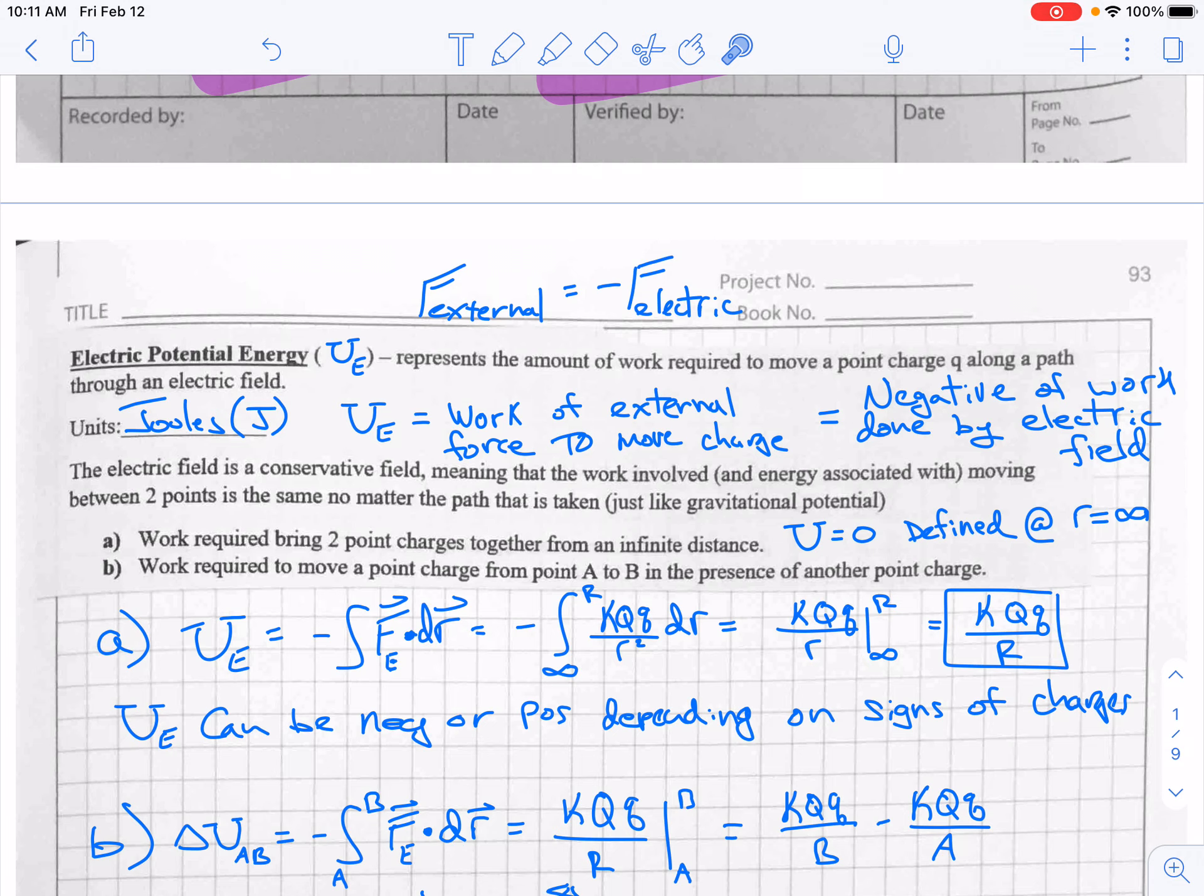The zero point for potential energy is defined at infinity. This is just a standard thing in all of E and M. So that's always going to be the case. You're never going to be choosing the zero level for potential energy. It's always going to be at infinity.